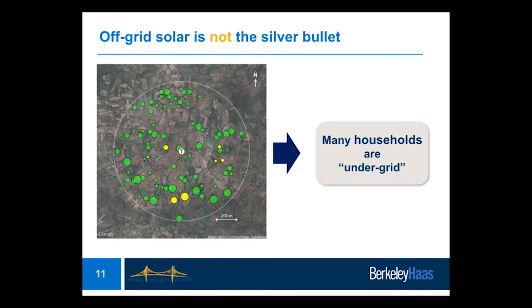It's great if we're reducing greenhouse gases in California and the U.S., but we need to think about how that's going to impact the rest of the world and importantly the developing world. One example from my research is off-grid solar. It's not fair to say I'm against off-grid solar, but I think it's getting way too much attention relative to the impacts it can have, and I'll give three reasons.